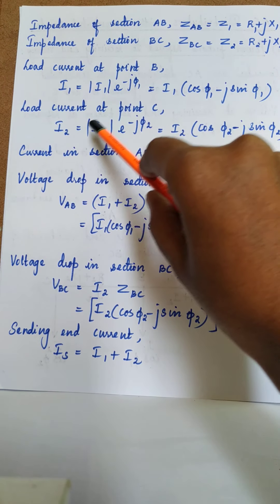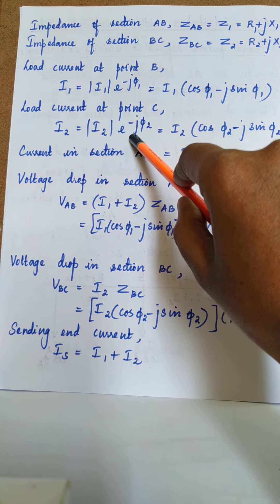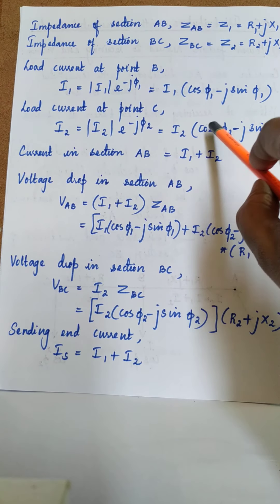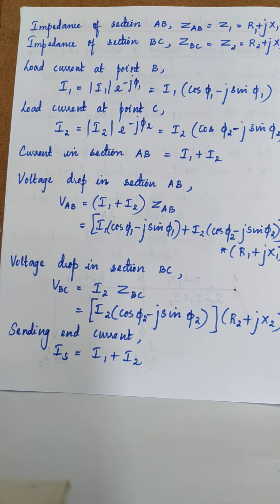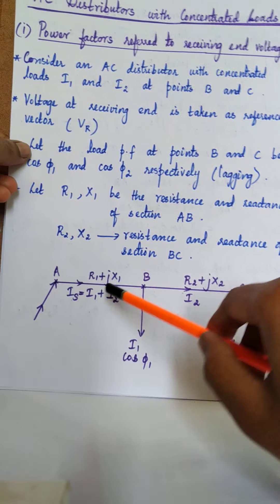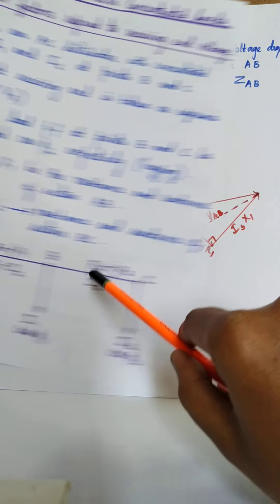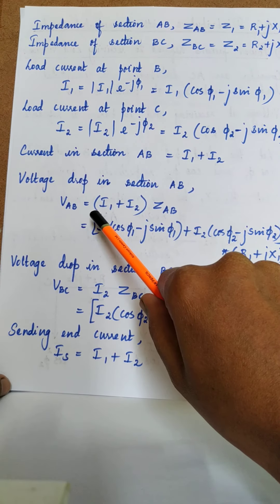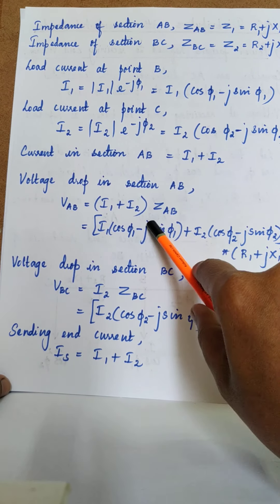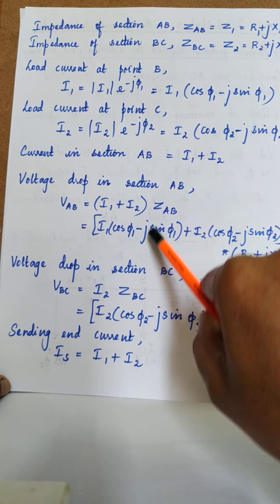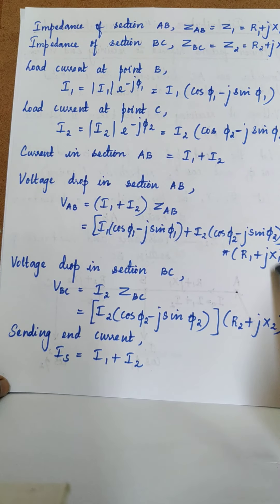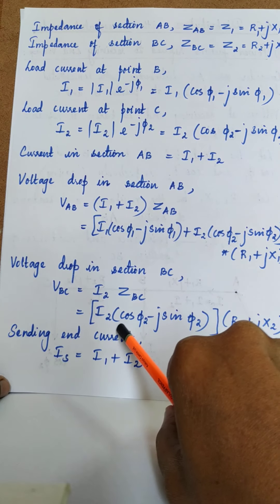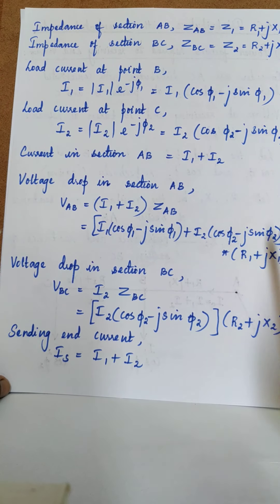Similarly, the load current at point C is I2 equal to magnitude of I2 times e to the power minus J phi 2 — again minus because of lagging power factor cos phi 2. Expanding, we get I2 times (cos phi 2 minus J sin phi 2). The current in section AB is I1 plus I2, which is the sending end current. The voltage drop in section AB is VAB equal to (I1 plus I2) into ZAB, substituting I1 and I2 and ZAB equal to R1 plus JX1. The voltage drop in section BC is VBC equal to I2 into ZBC.